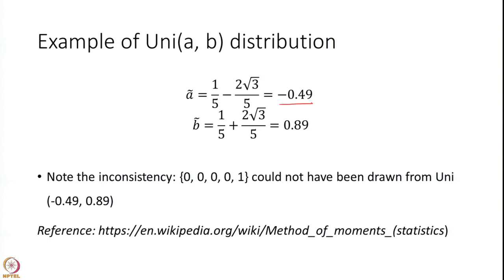Now we are saying that the data has come from the interval (-0.49, 0.89). Can you imagine how 1 can fall in this interval? The zeros are fine, but 1 is not — 1 cannot fall in this interval, and this is the inconsistency I wish to bring out to you. Method of moments estimators are easy to calculate and very attractive, and readily available on a variety of software including R programming. But be careful when you use it — it is much better to use the maximum likelihood estimator compared to the method of moments estimator.